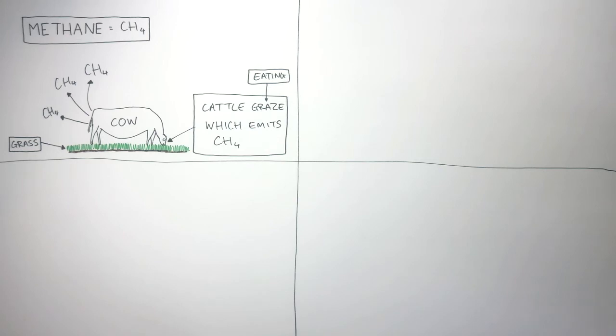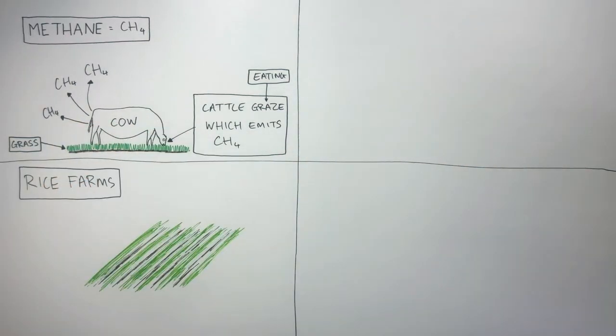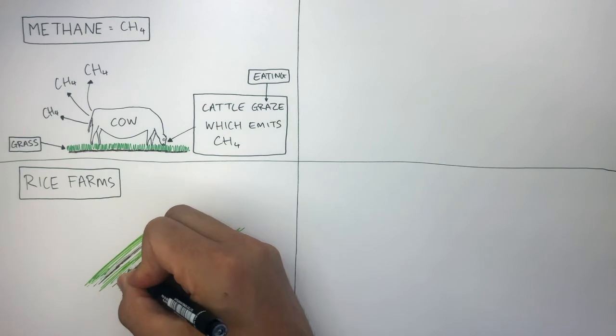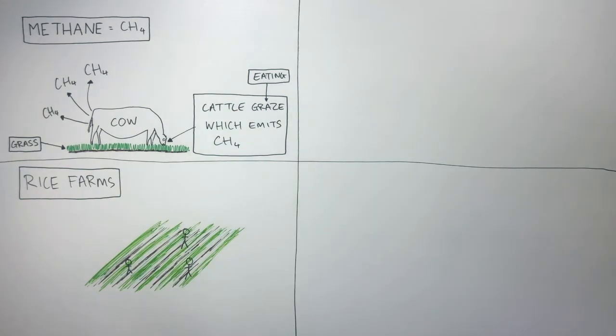Another source of methane are rice farms, also known as paddy fields. As rice farming takes place, these paddy fields release methane into Earth's atmosphere.